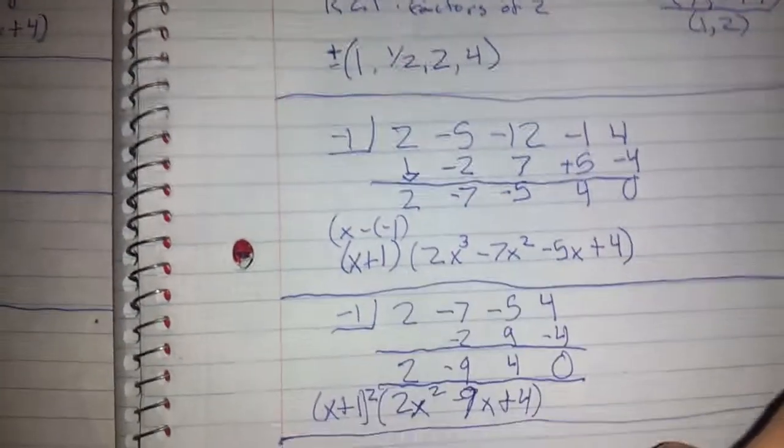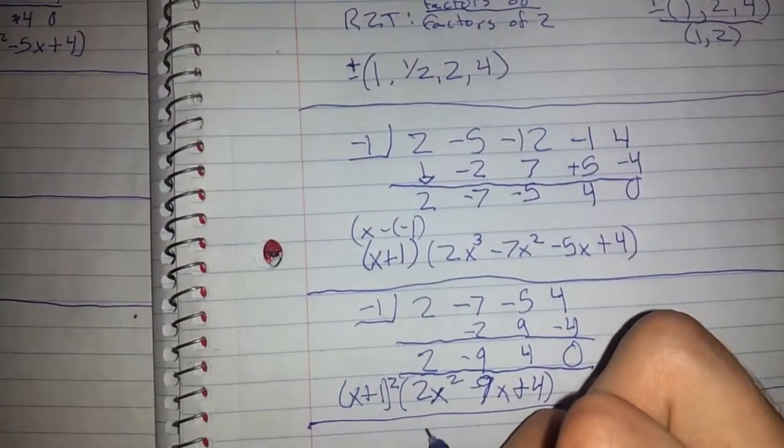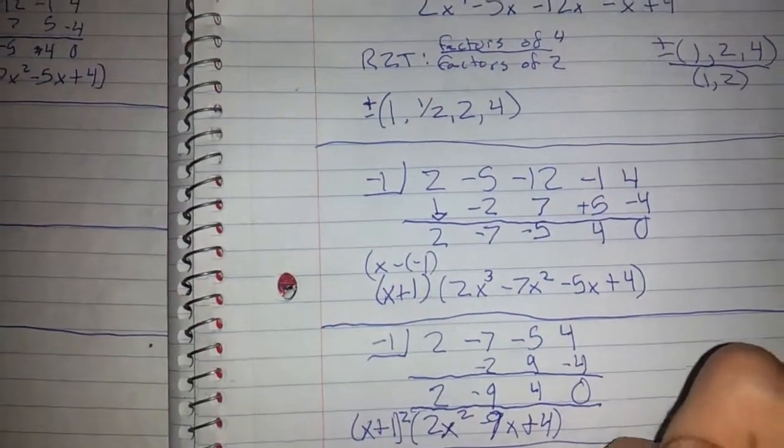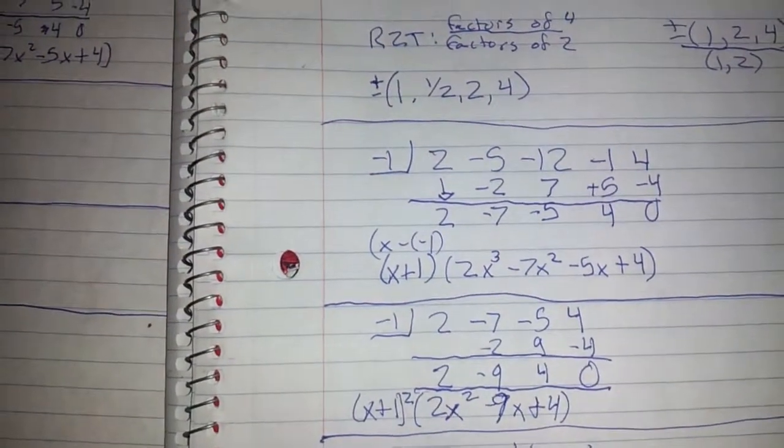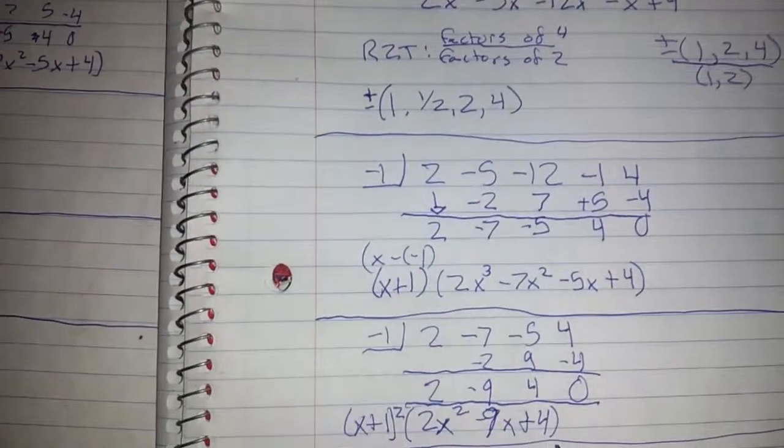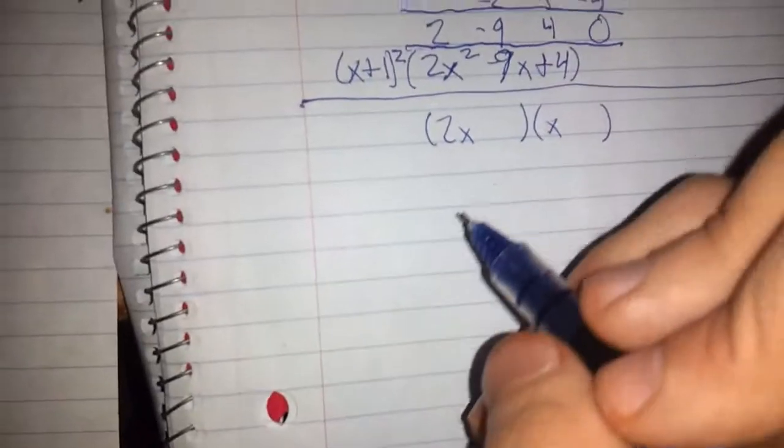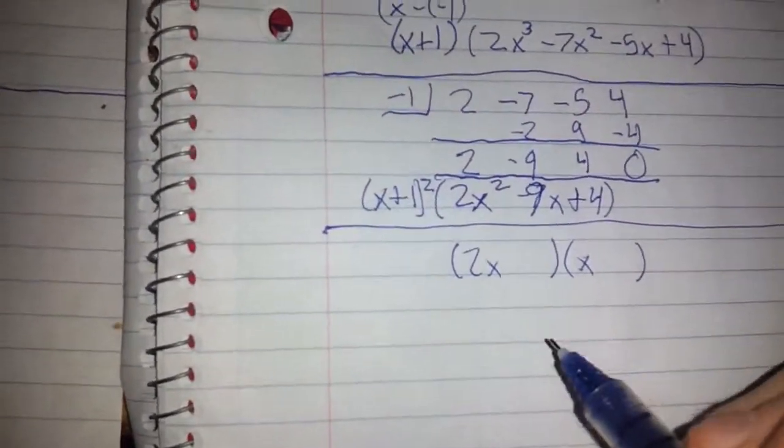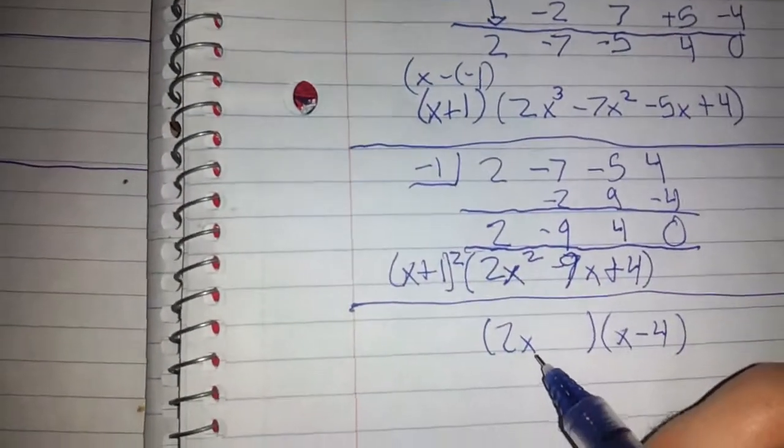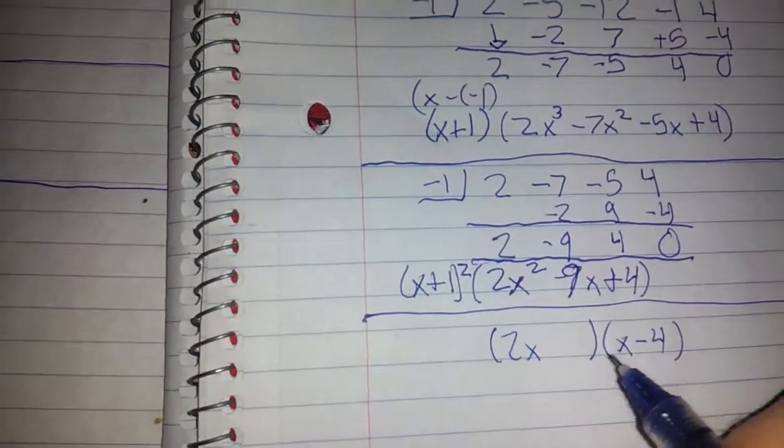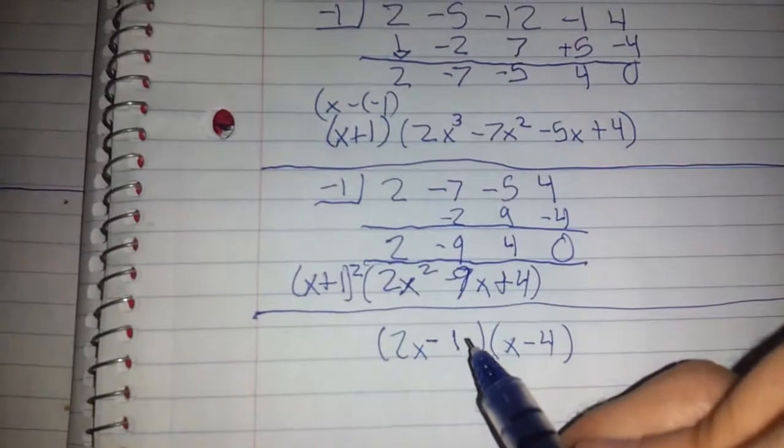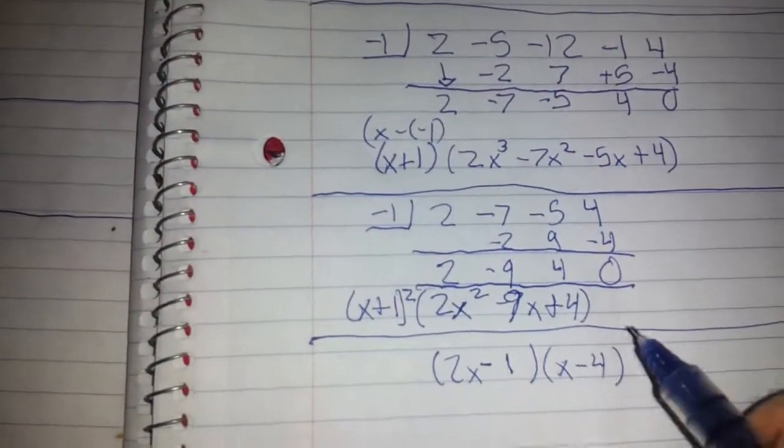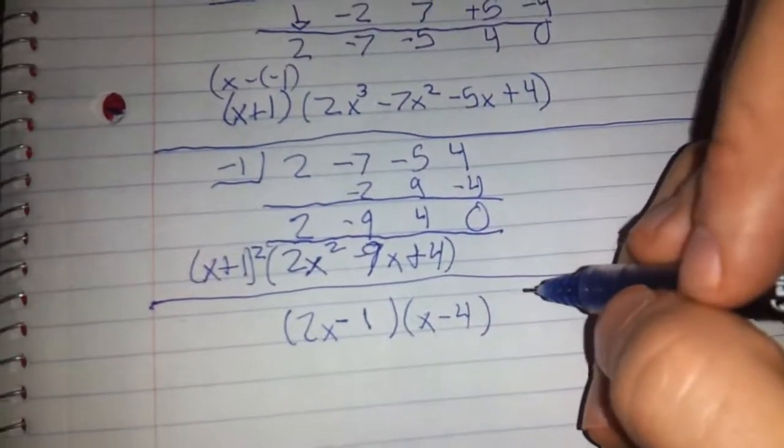Now we can factor this out. This factors nicely to a 2x here. We need to get negative 9 by adding the values and positive 4 by multiplying the values. We're going to get that with a negative 1 and a negative 4. Because a negative 4 multiplies over here to a negative 8x. And then a negative 1 here gives us a nice negative 9x. And we get our positive 4 as well. So here we have all of the necessary synthetic division and factoring completed.